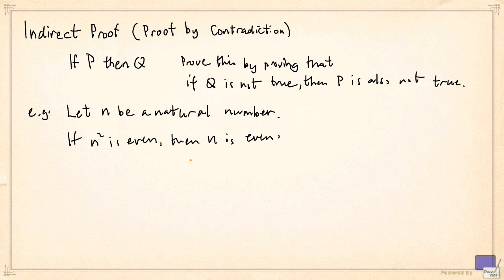So we can prove this by proving that if it is not true that n is even, then it is not true that n squared is even. The most succinct way of saying that is, if n is odd, then n squared is odd. And that is the contrapositive statement of this statement here.